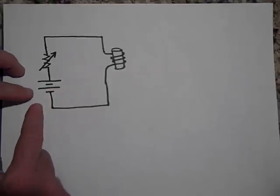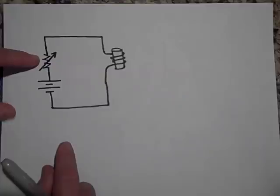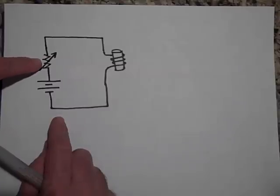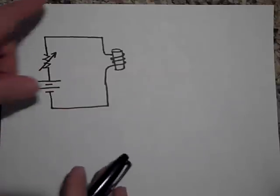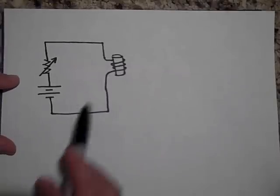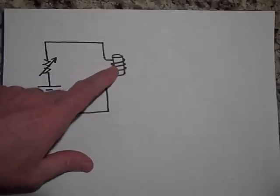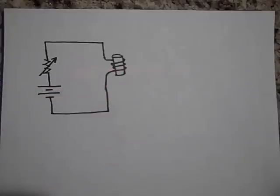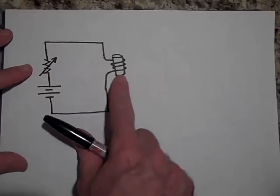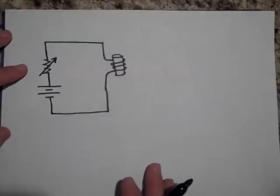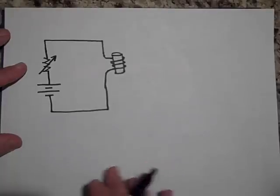If you have a DC battery in series with a variable resistor and an inductance coil or solenoid, and you change the resistance, you're going to change the current in the circuit. By changing the current, you change the magnetic field in the solenoid. That changing magnetic field means the flux is changing, so you'll induce a voltage in that solenoid. This is called self-inductance, because the solenoid is responsible for the change in flux, but it tries to resist that change anyway.